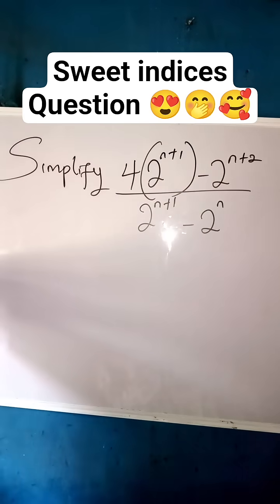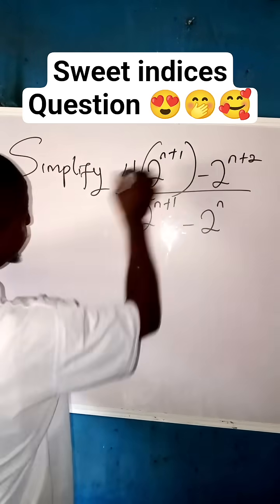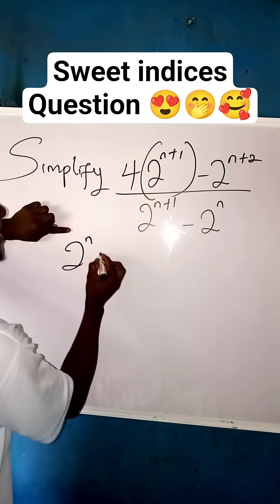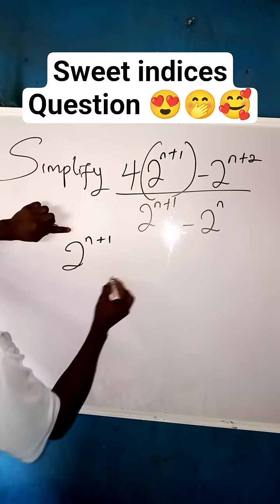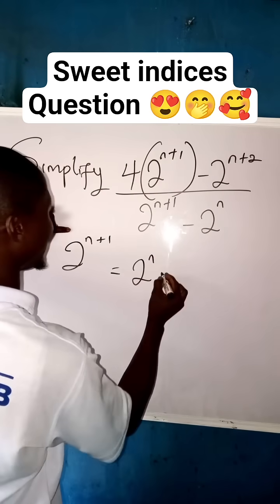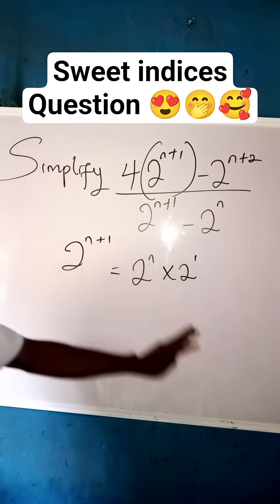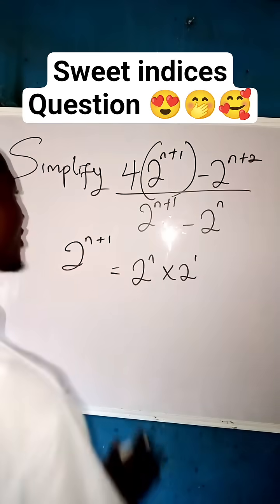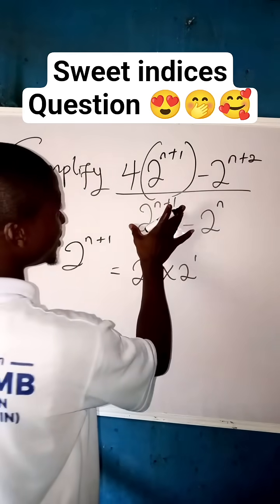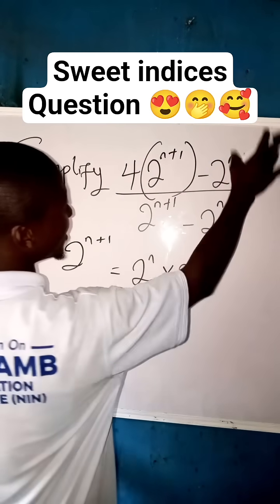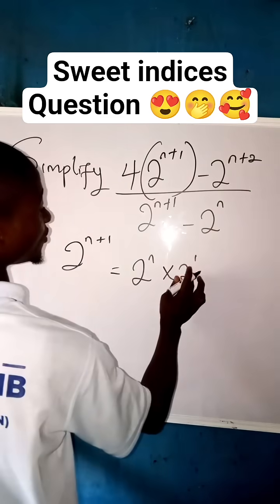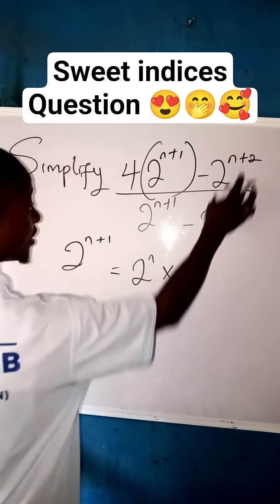The first thing I'm going to do is expand this. Remember, as you're having 2 to the power of n plus 1, we can write it as 2 to the power of n times 2 to the power of 1. The same thing we do here, and also here. But this one will be 2 to the power of n times 2 to the power of 2.